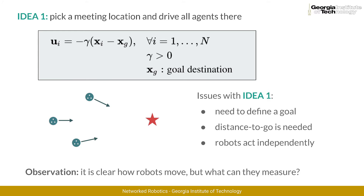In addition, the robots need to measure the distance from the goal, or at least have knowledge about their own location and the location of the meeting point. Also, when using this strategy, the robots are acting completely independently from one another, and there is no flow of information.